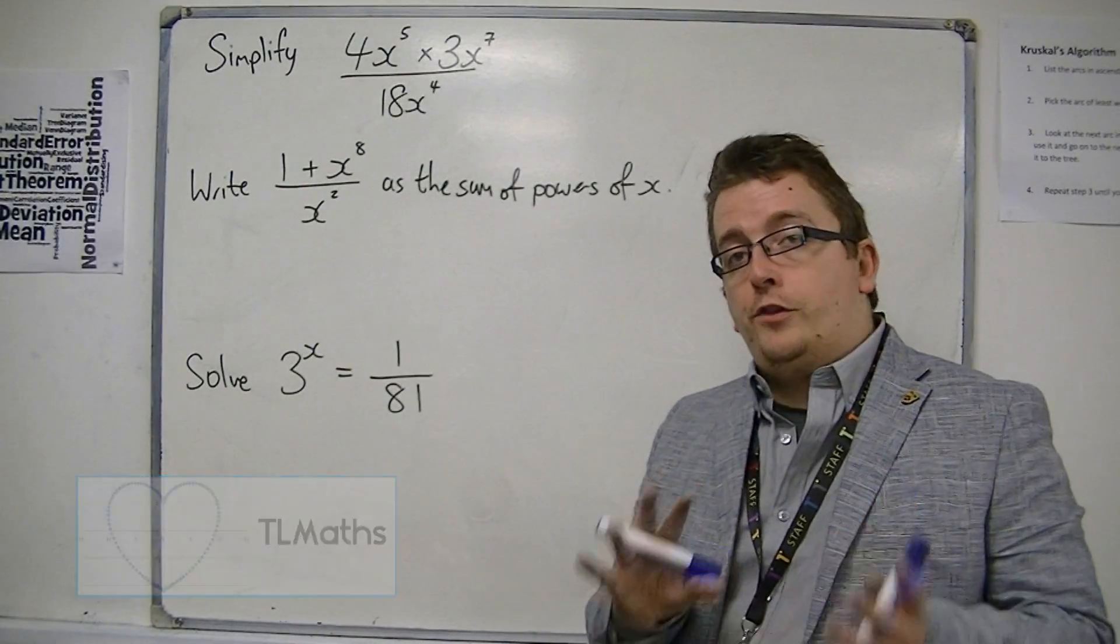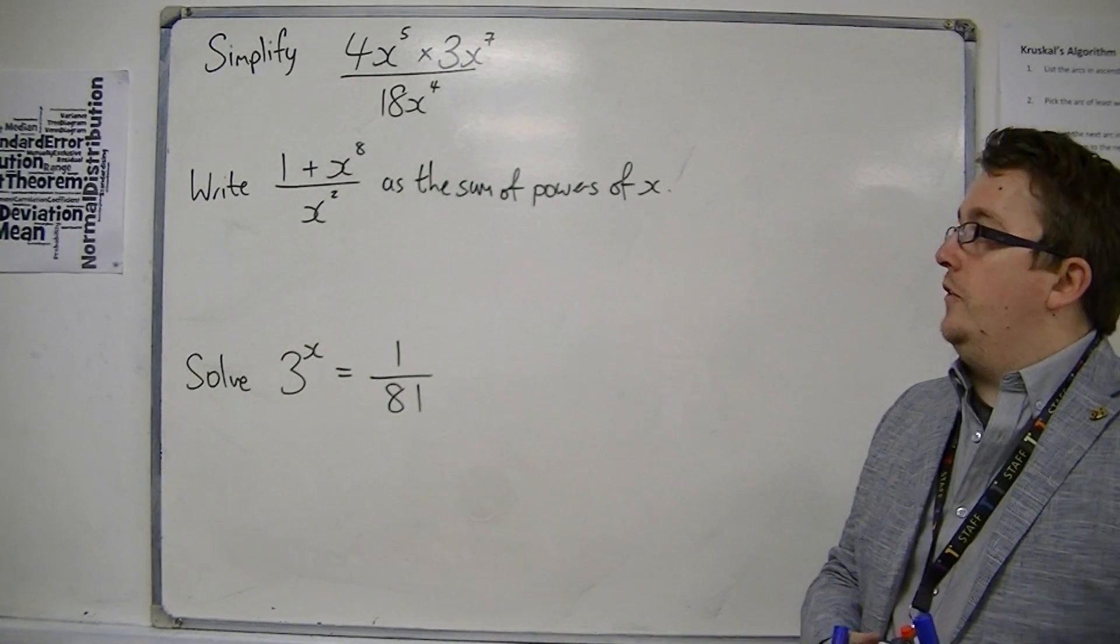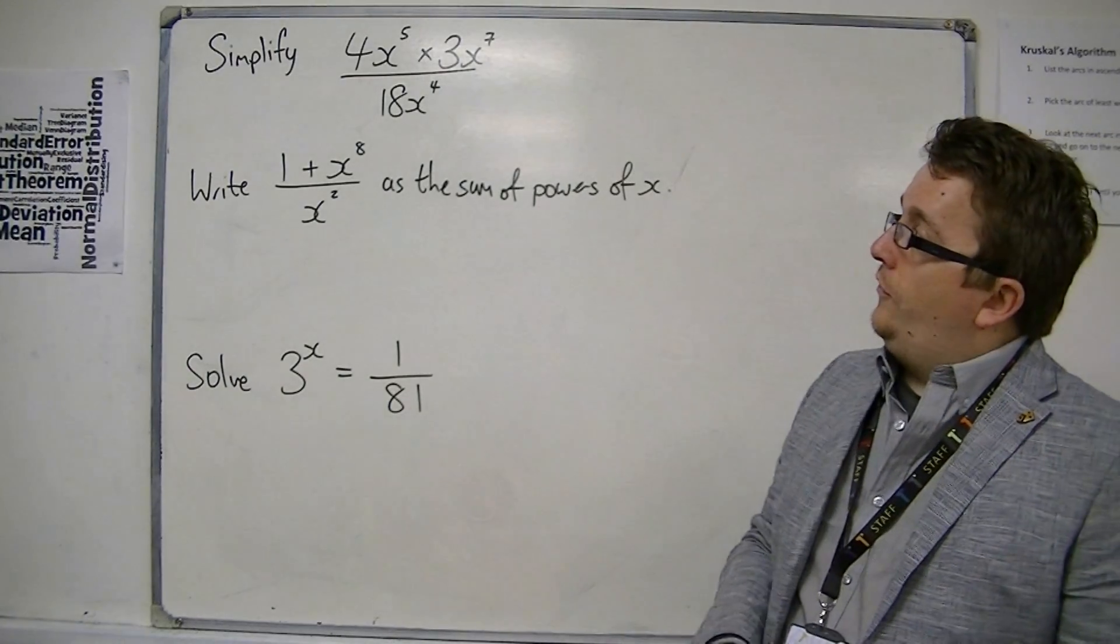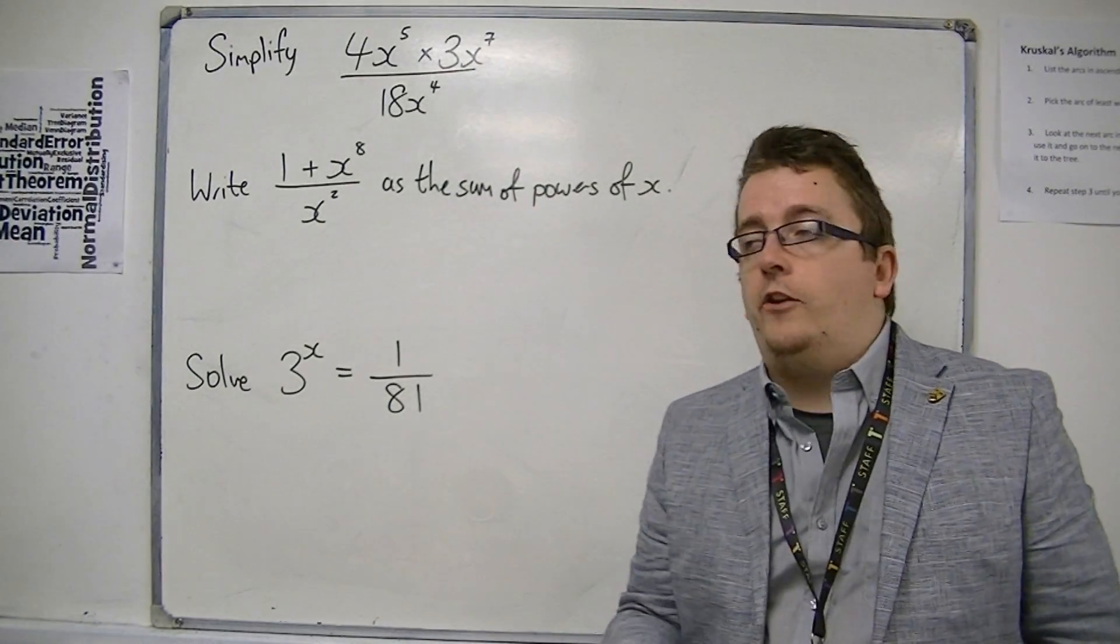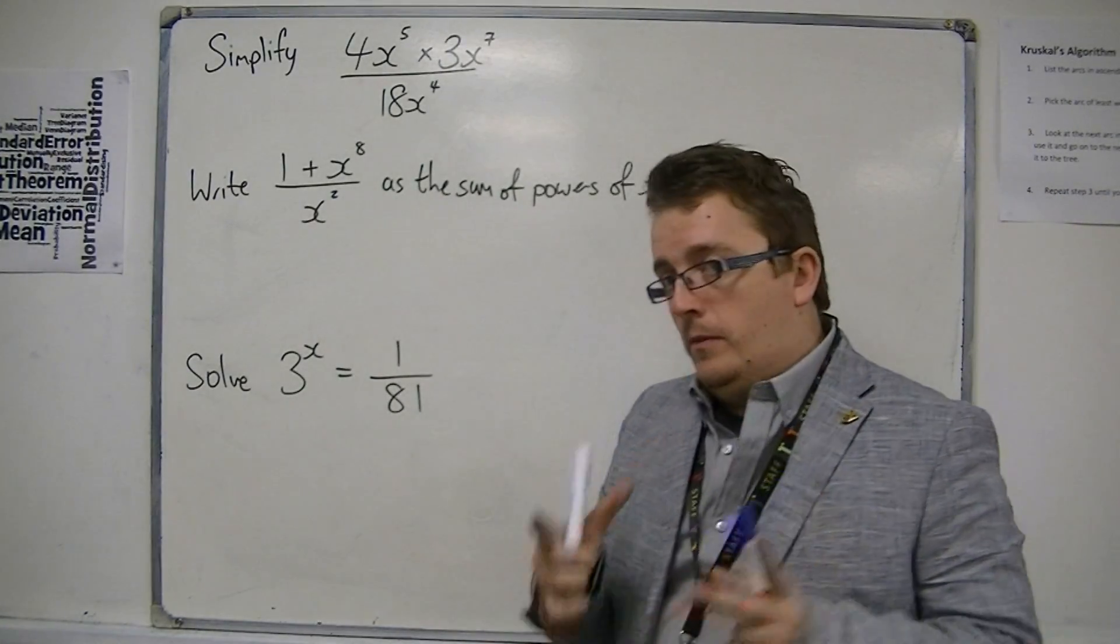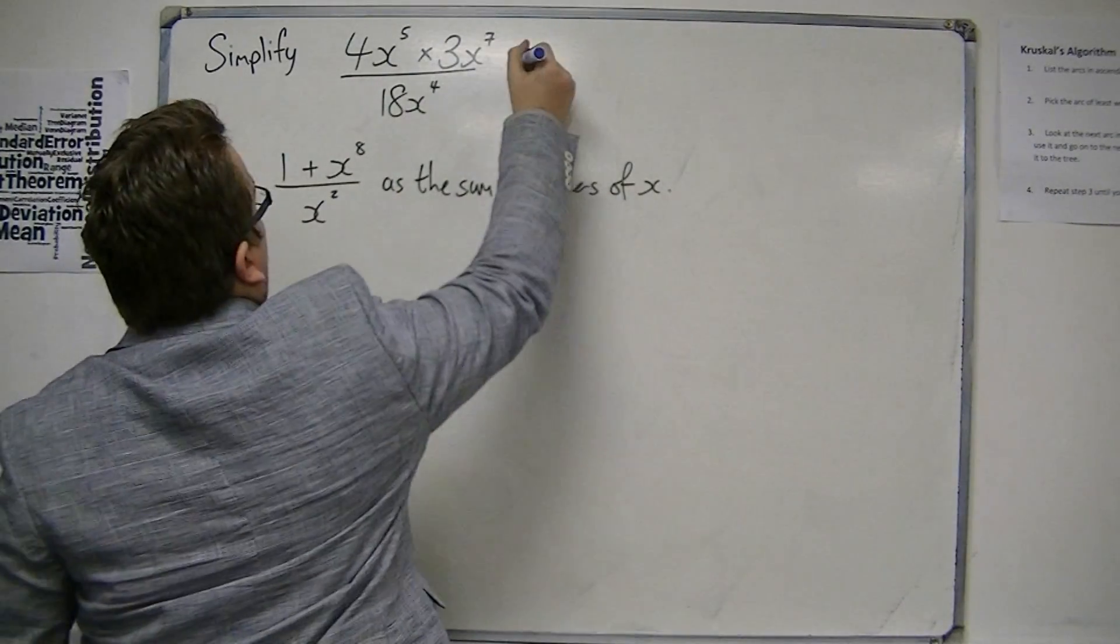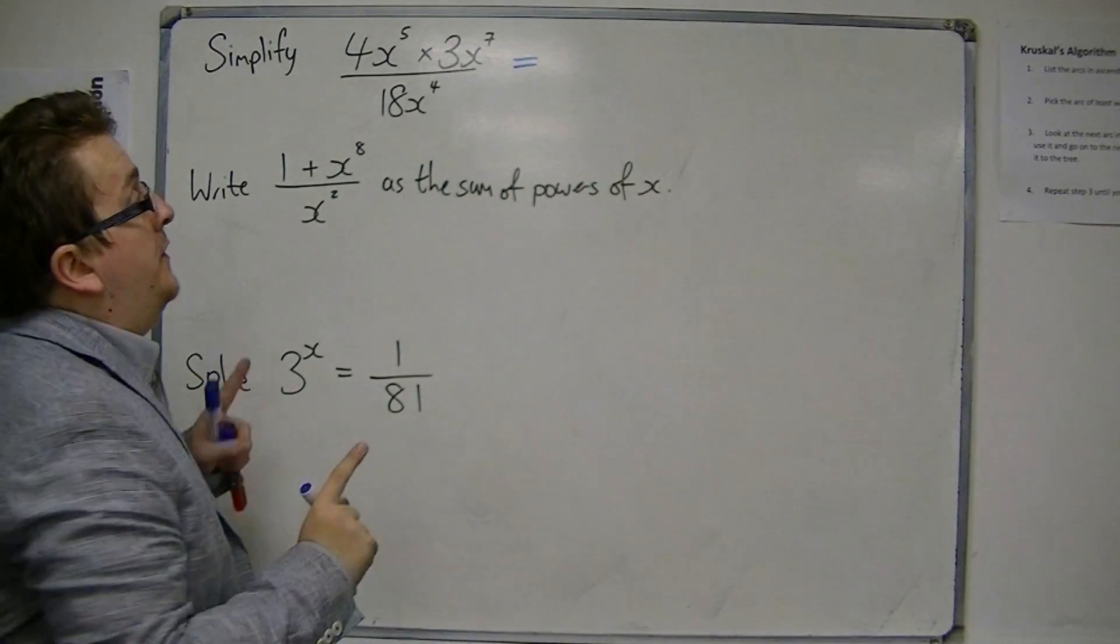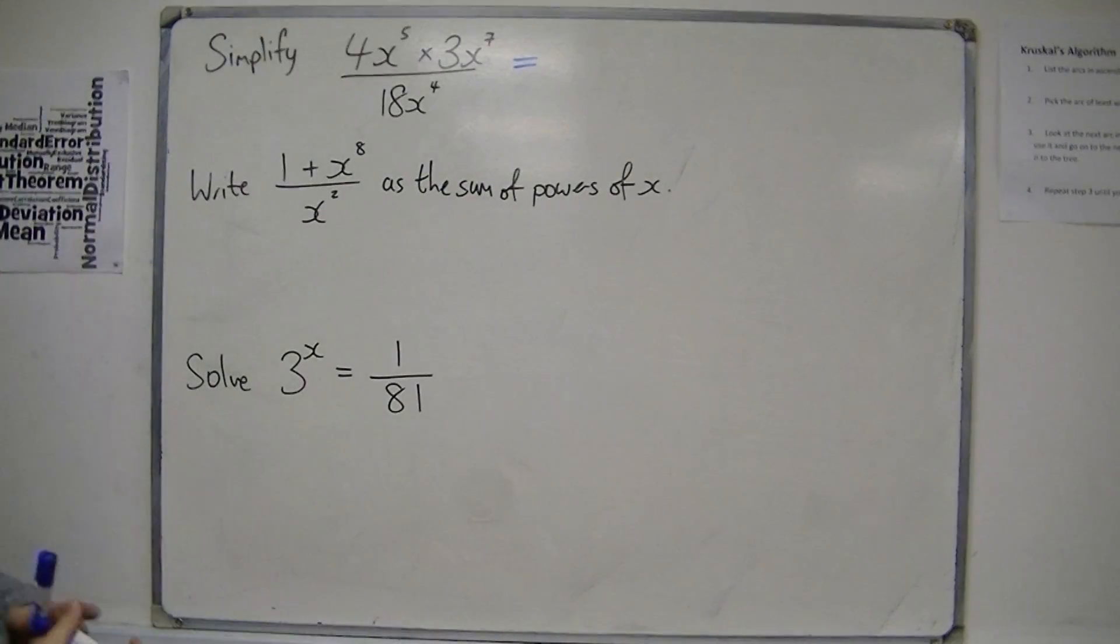Okay, in this video we're going to look at three more examples of using indices. The first one is simplifying an algebraic expression. So once again, take your time and take steps in order to solve it. Deal with the numerator first in this case, because that's the more complicated of the two.